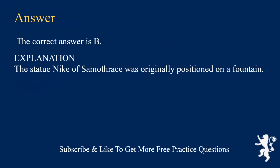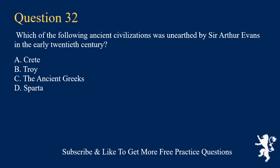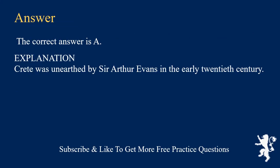Explanation: The statue Nike of Samothrace was originally positioned on a fountain. Which of the following ancient civilizations was unearthed by Sir Arthur Evans in the early 20th century? A. Crete. B. Troy. C. The ancient Greeks. D. Sparta. The correct answer is A.